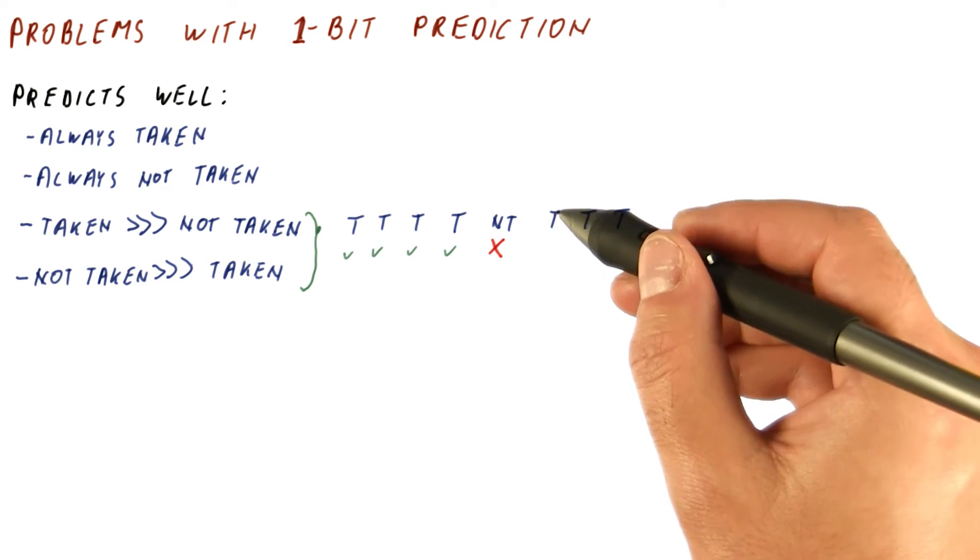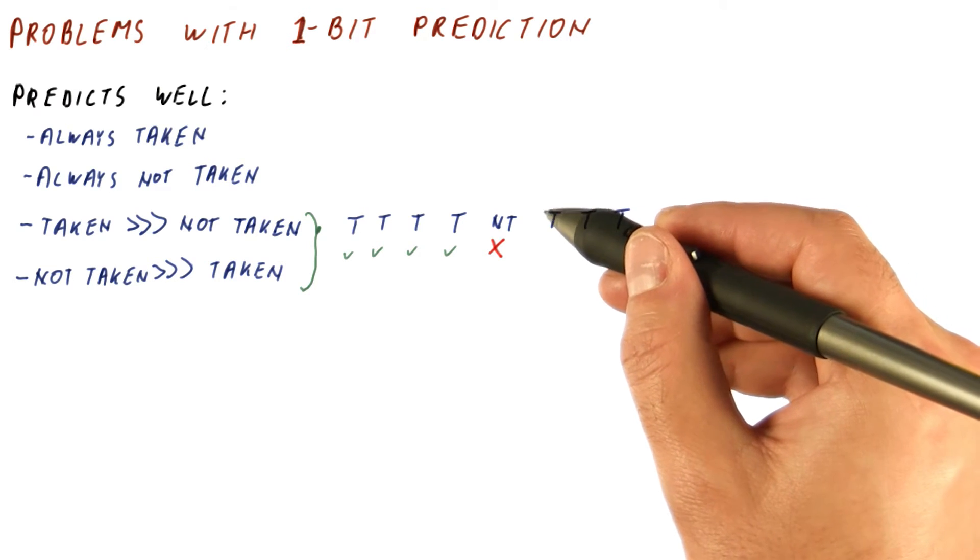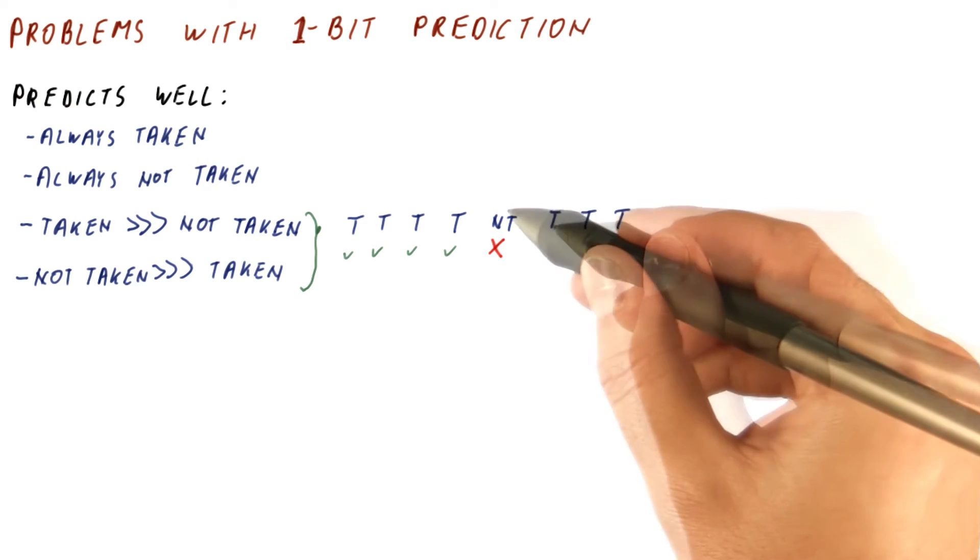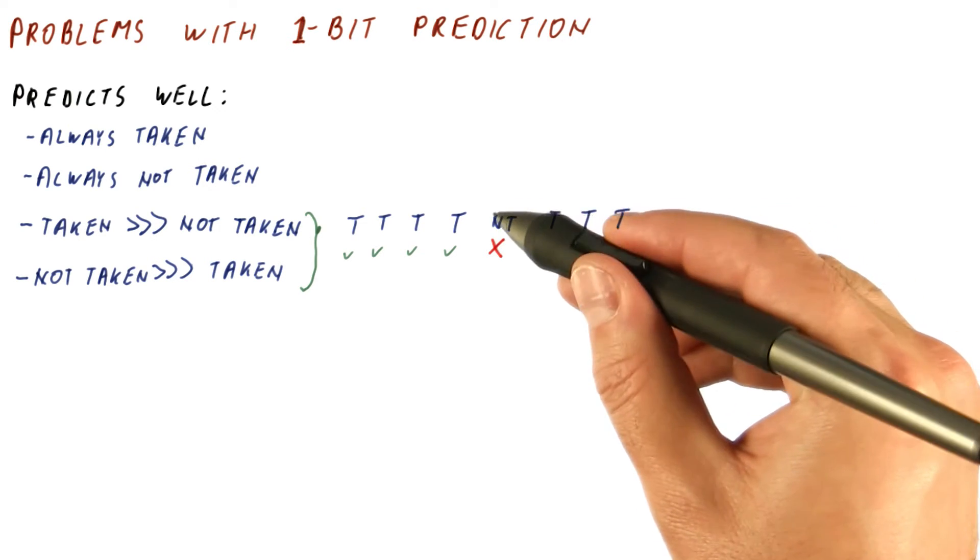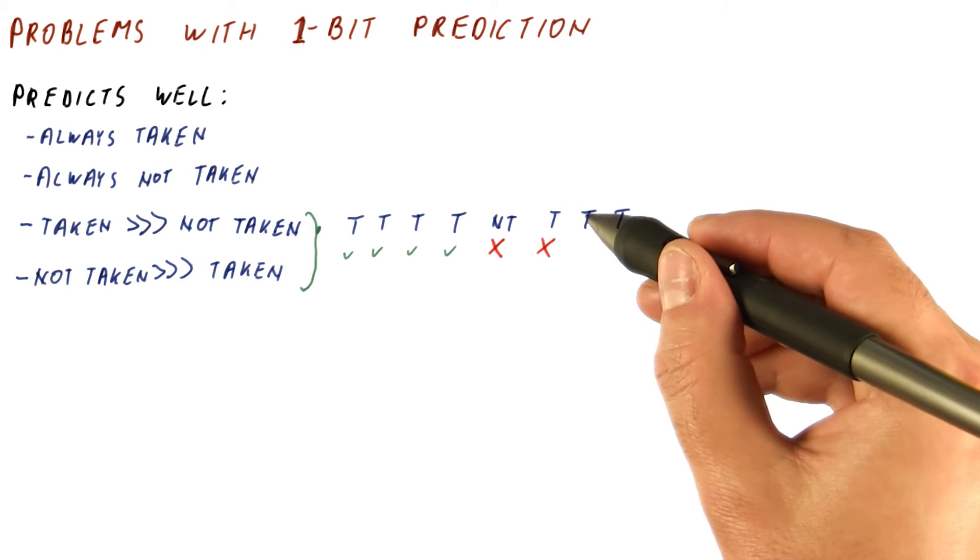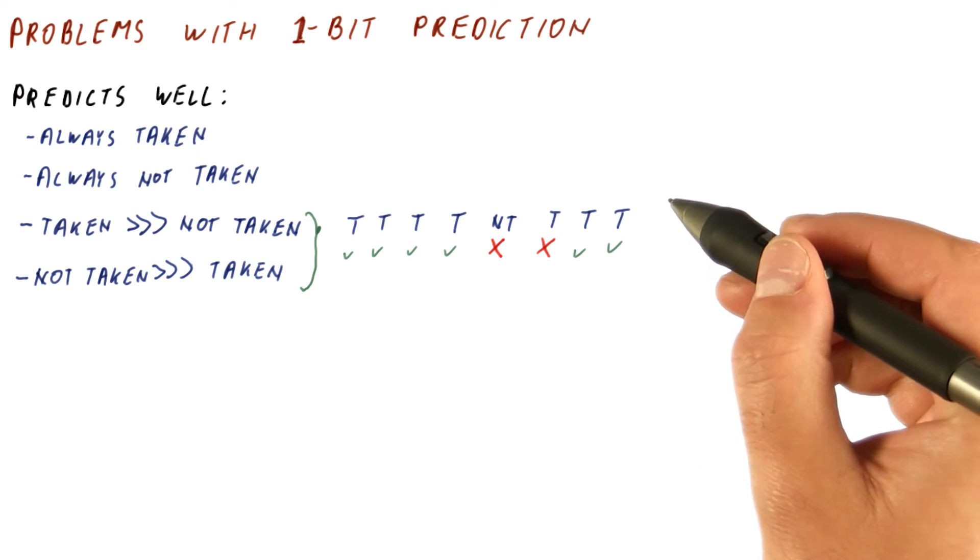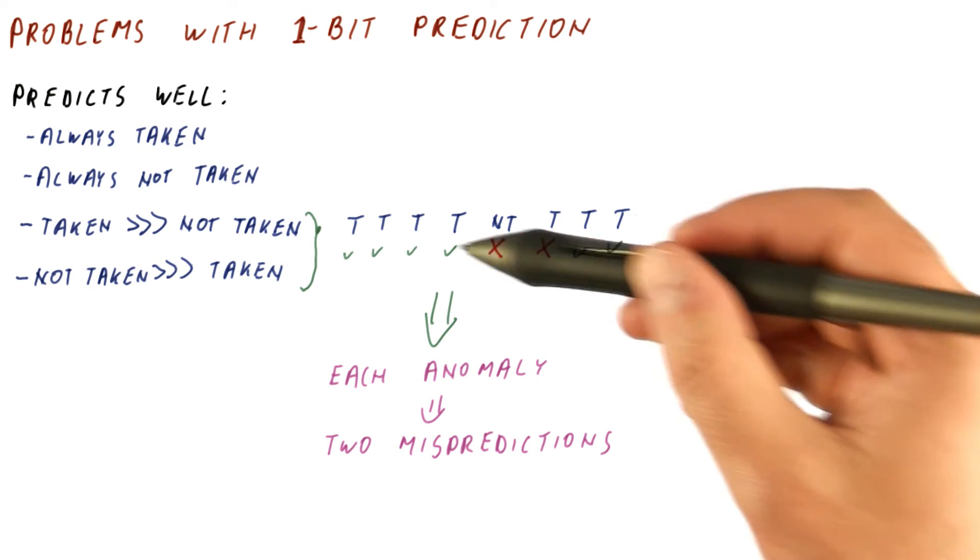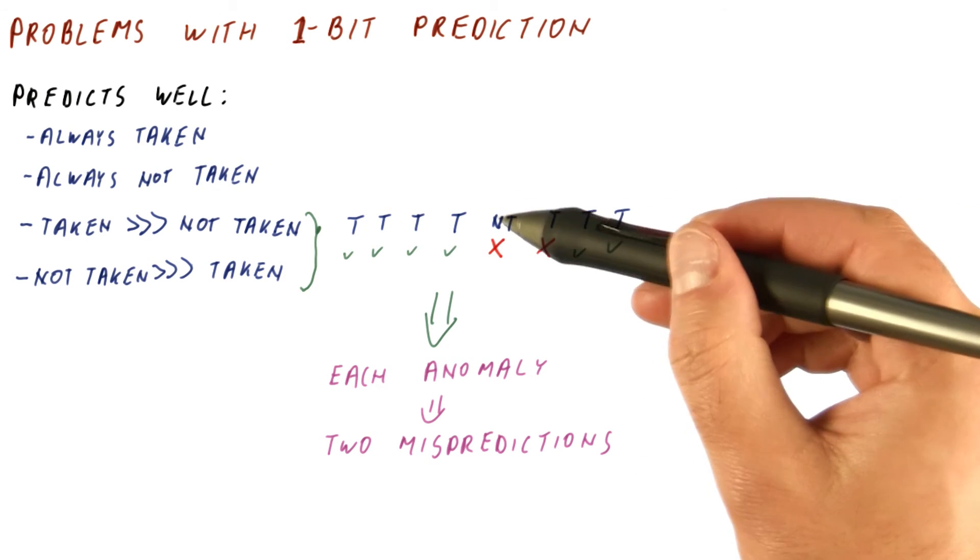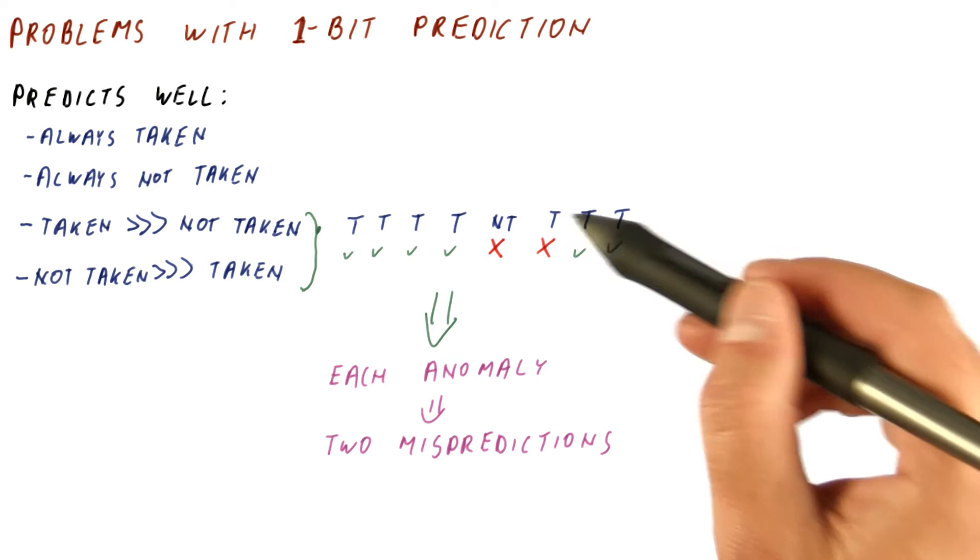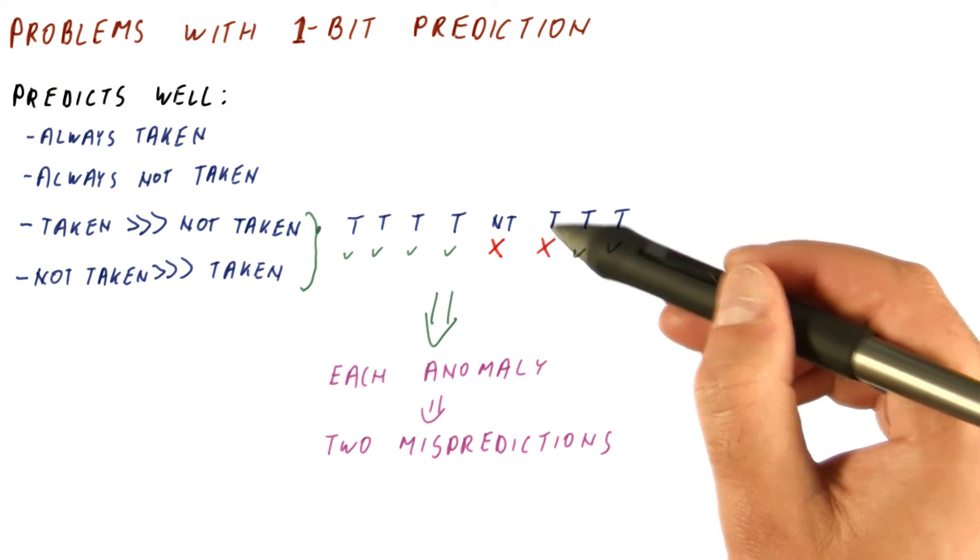However, there is an interesting problem here, which is now that we are back to our taken behavior, which is the vastly dominant behavior in this case, the last outcome was now not taken, so we are going to mispredict this branch too. Now we are predicting not taken, and the branch will be taken. After this, the previous outcome was taken, so we predict taken, and we continue predicting taken. So the problem really is that each anomaly, such as we have a branch that is almost always taken but sometimes it's not taken, results in two mispredictions. One for the anomalous behavior, and then once more for the normal behavior that follows the anomaly.